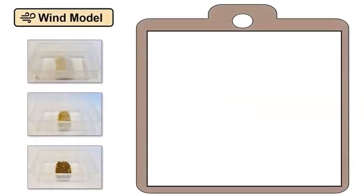What will we do first? Well, remember, we want to explore how wind changes the land materials in our model. So let's start by observing the land materials before we add the wind. We can write, observe the land materials on our procedure sheet. What will we do next?